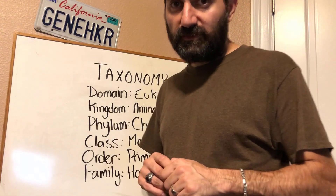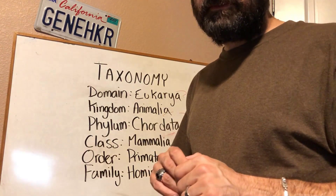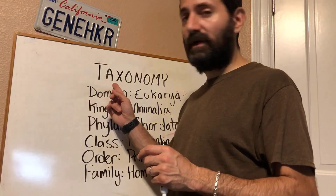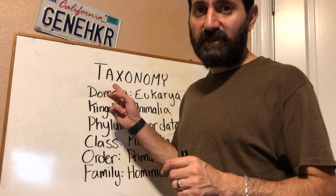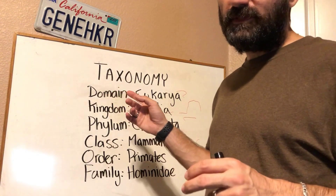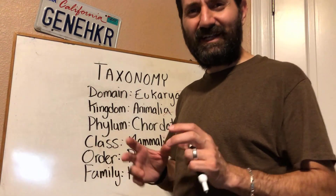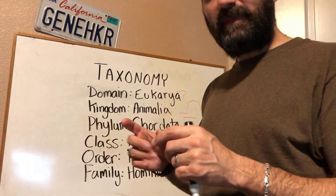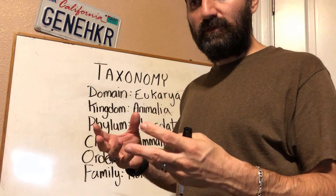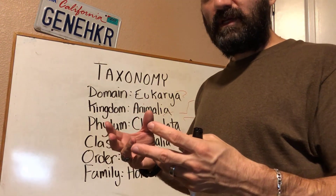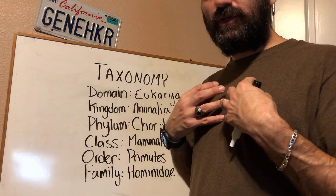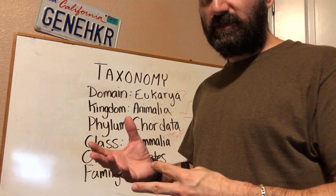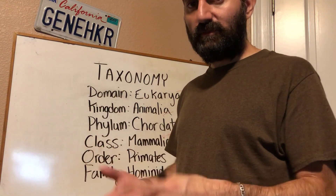Hey everyone, today I'm going to introduce this concept of taxonomy, this field of biology called taxonomy. Taxonomy is a field of biology concerned with classifying organisms based on relatedness. So if we are humans, where does that put us in relation to other organisms on earth?